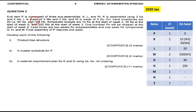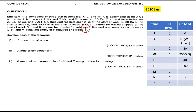On-hand inventory: 20 for L, 40 for G, and 200 for H. Scheduled receipts are: 10 K at week 3, so 10 at week 3; 30 K at week 6, so 30 at week 6; and 200 W at week 3. 100 P must be shipped at the start of week 6.